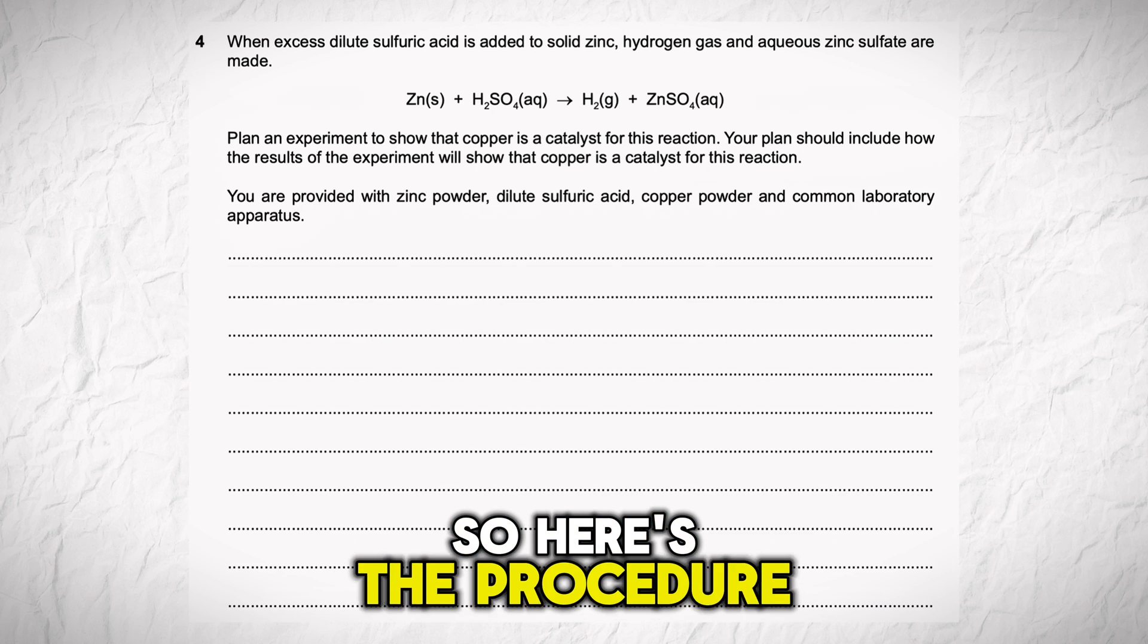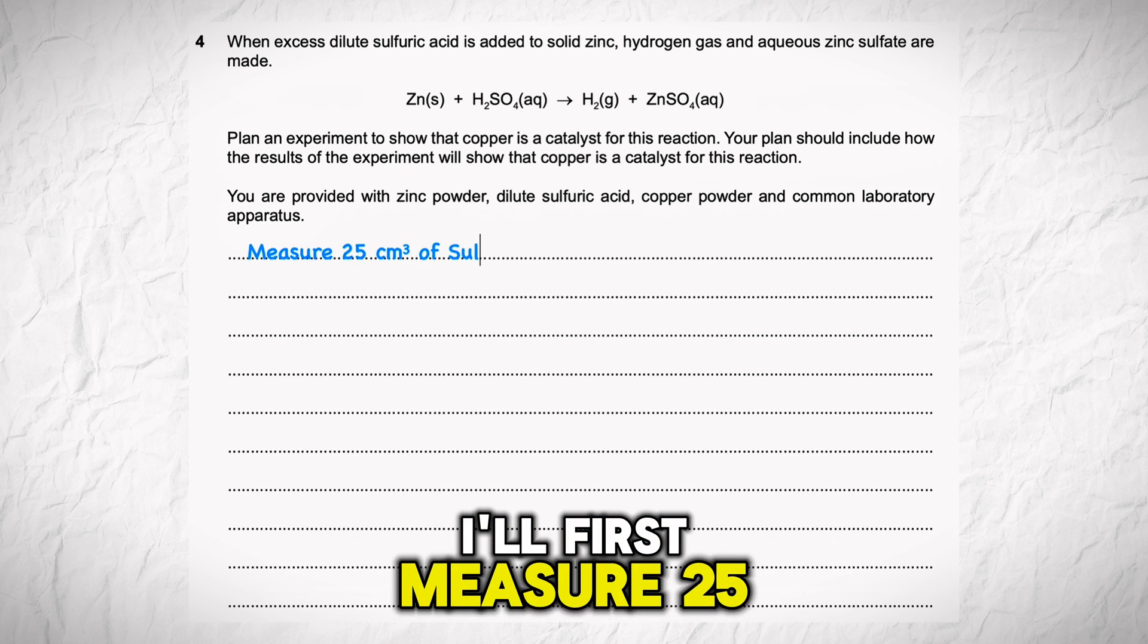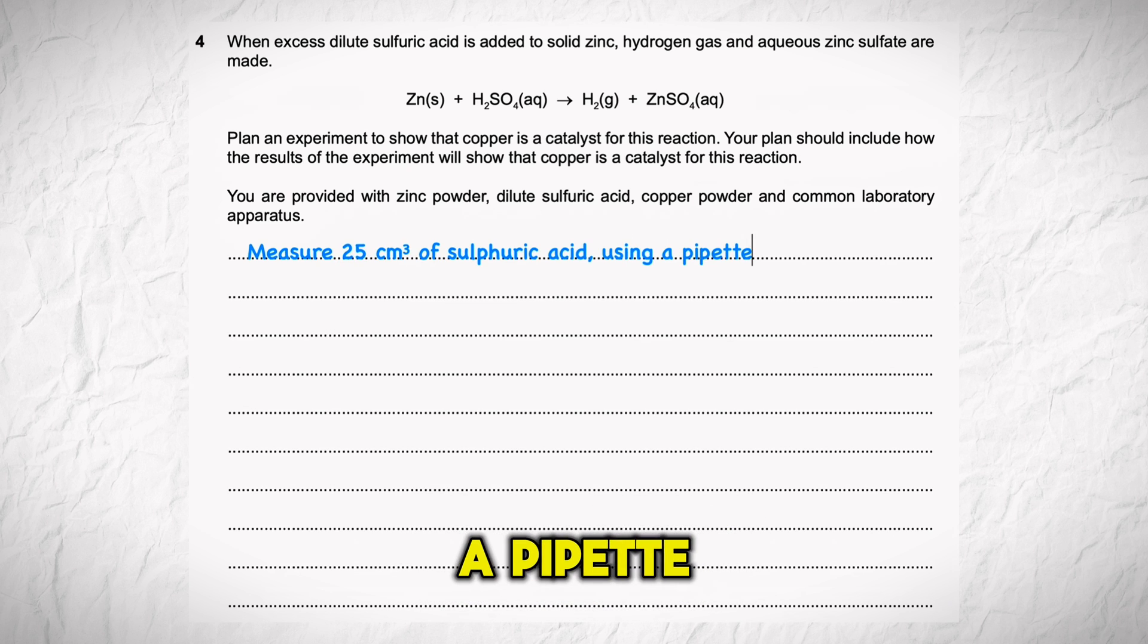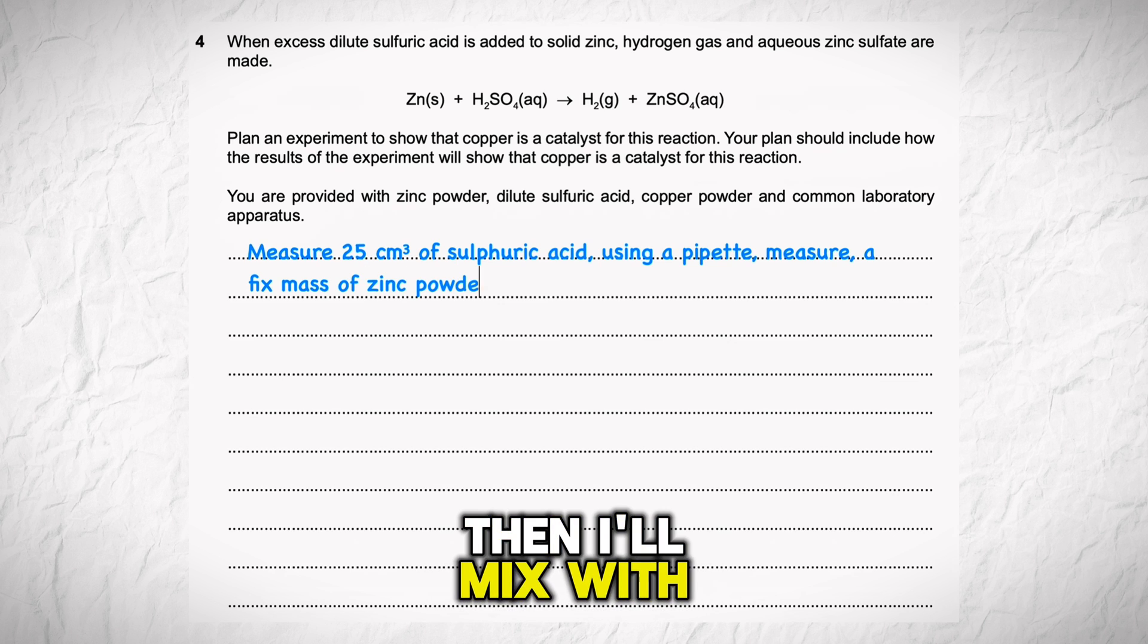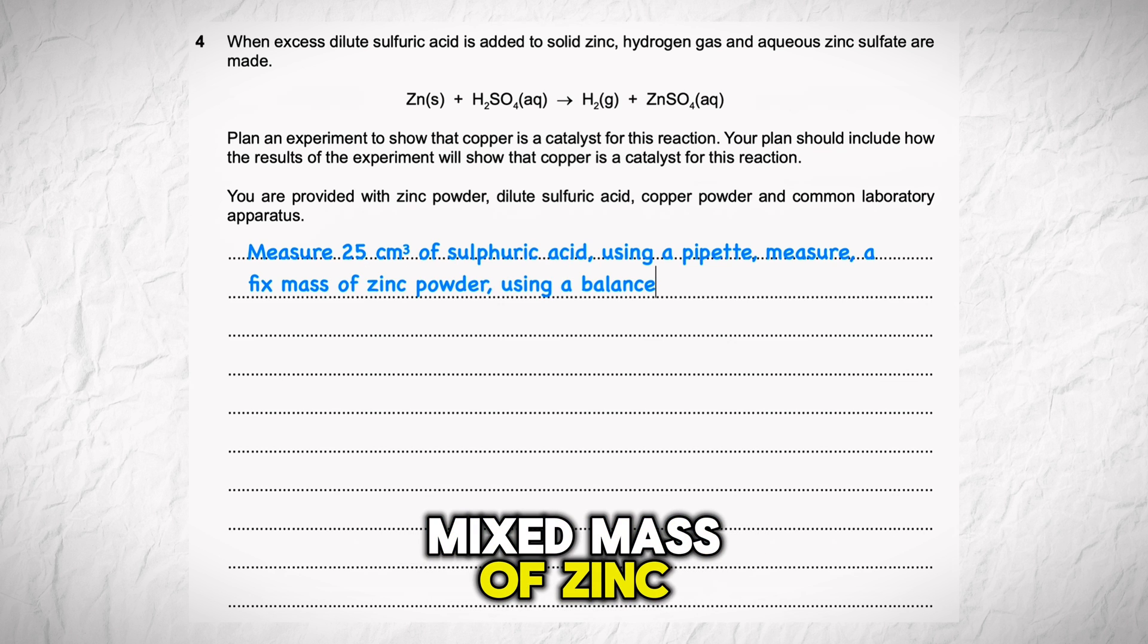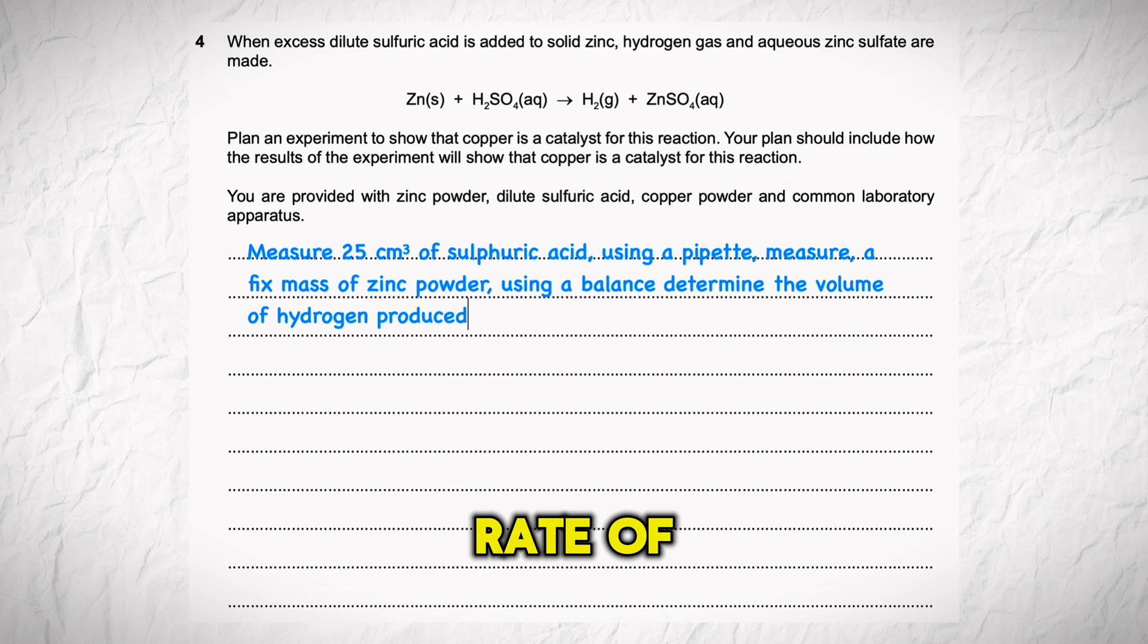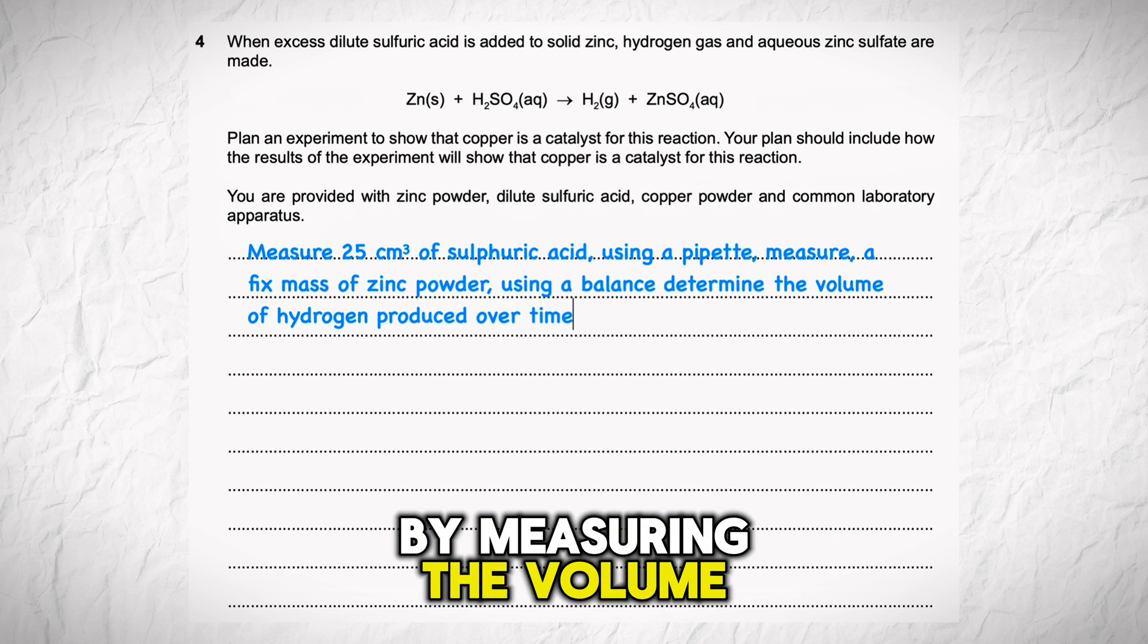So here's the procedure once again. I'll first measure 25 cm³ of sulfuric acid using a pipette, then I'll mix it with a fixed mass of zinc powder. I will find the rate of reaction by measuring the volume of hydrogen gas produced over time.